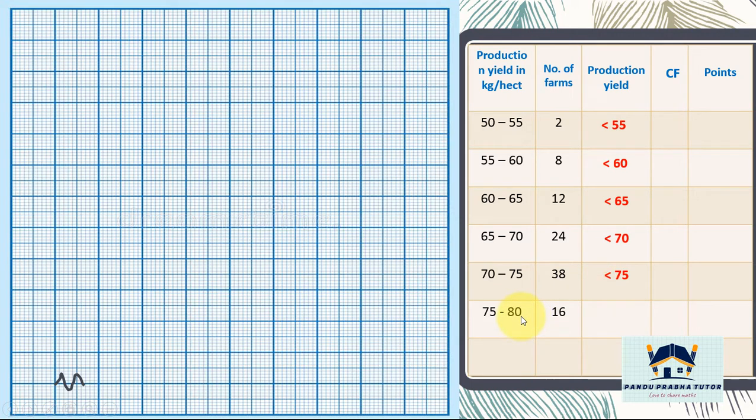Now we are going to find cumulative frequency. First one is 2 as it is. 2 plus 8 is 10. 10 plus 12 is 22. 22 plus 24 is 46. 46 plus 38 is 84. 84 plus 16 is 100. This is cumulative frequency.